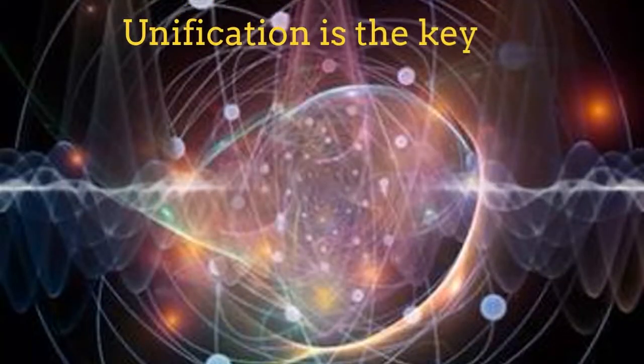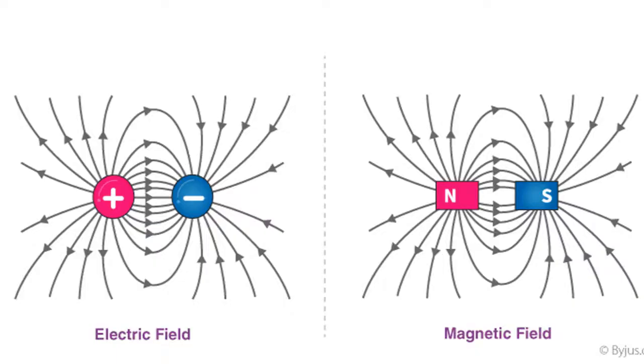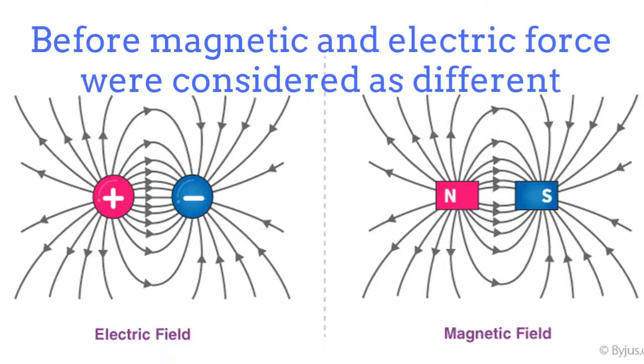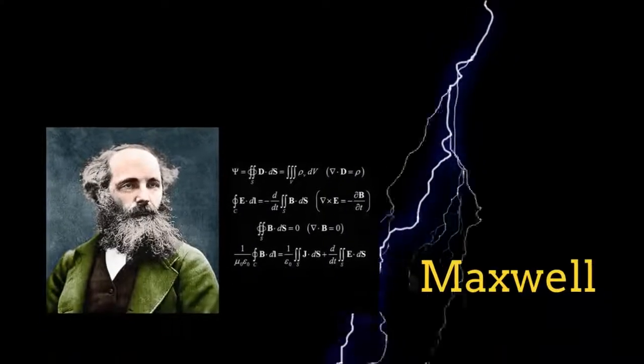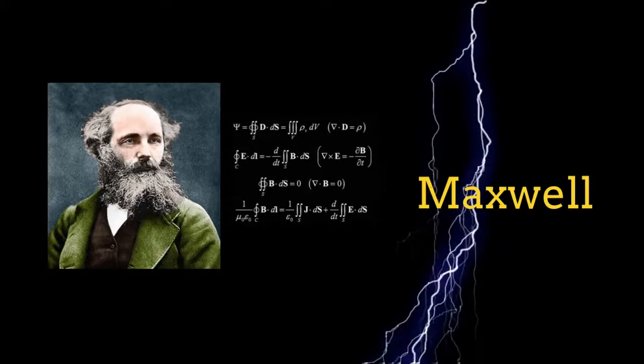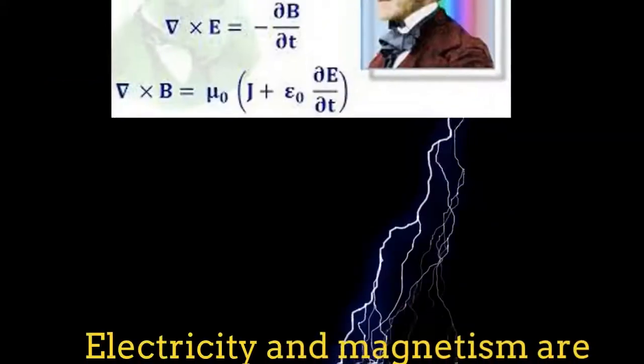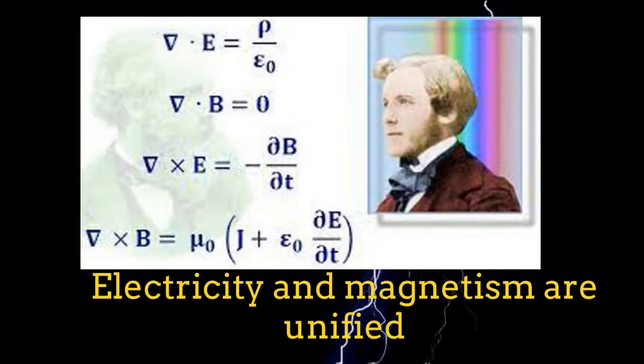Unification is an important issue in physics. Basically, the whole modern physics is always looking for unification. In the past, electricity and magnetism were considered as two separated forces. Thanks to the works of Maxwell and others, it was later understood that both forces were just manifestations of a single interaction, which we call today electromagnetic interaction.